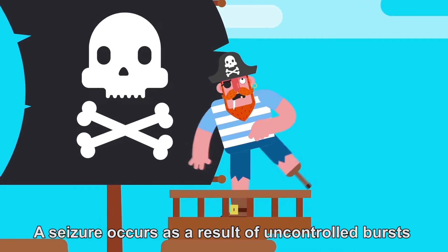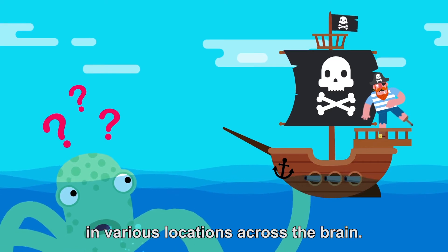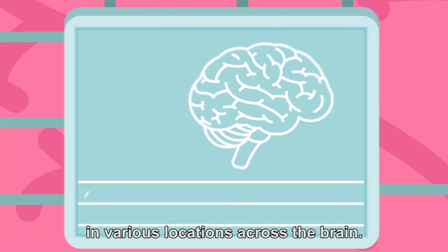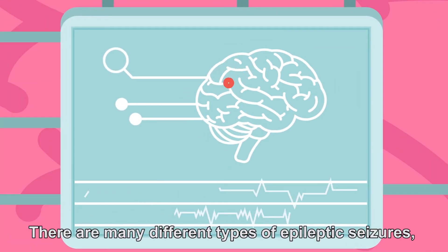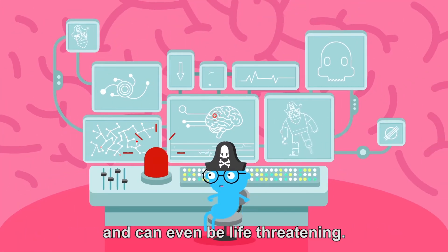A seizure occurs as a result of uncontrolled bursts of electrical activity in networks of nerve cells in various locations across the brain. There are many different types of epileptic seizures, some of which can affect one's normal life and can even be life-threatening.